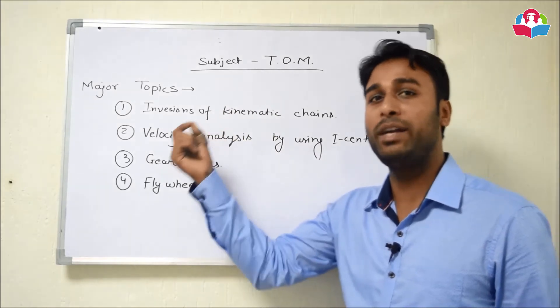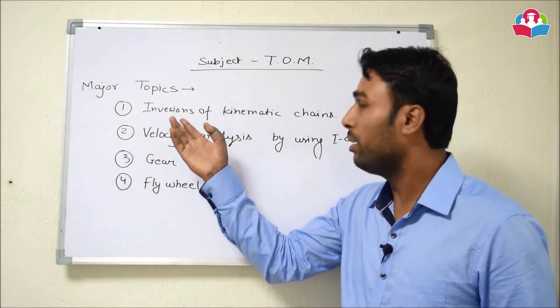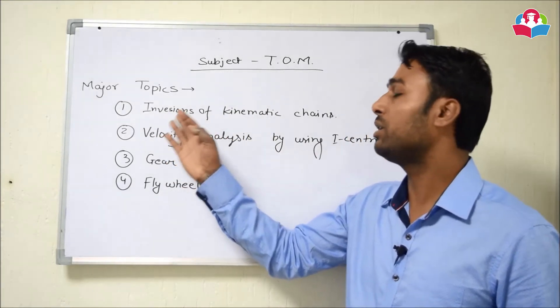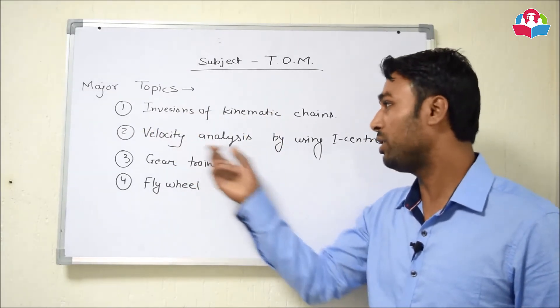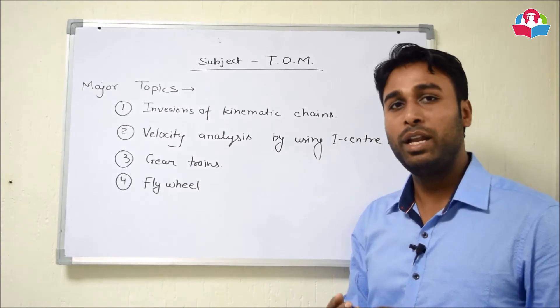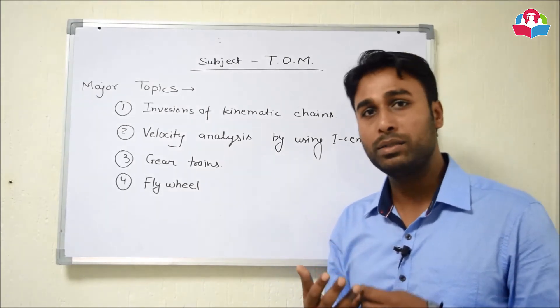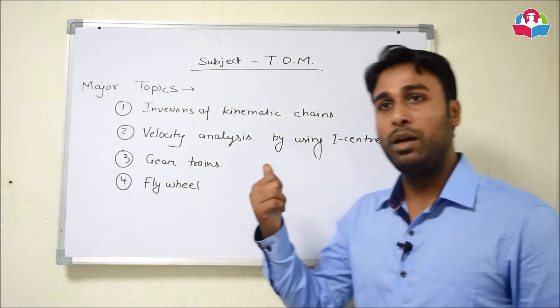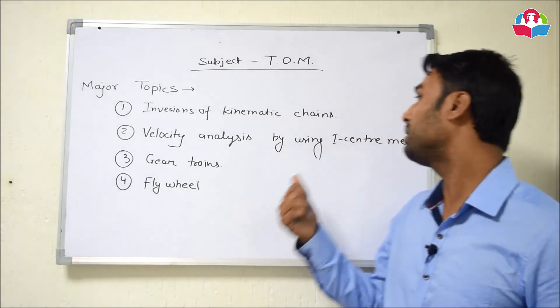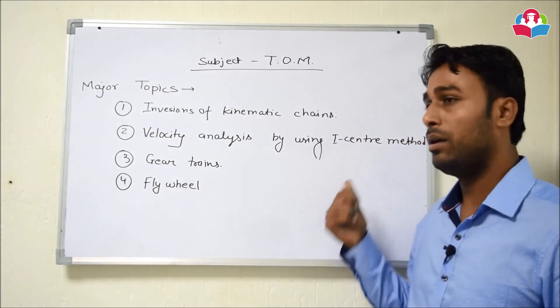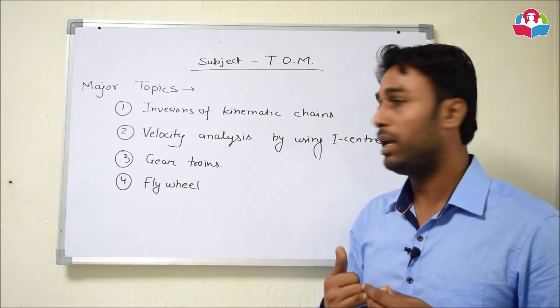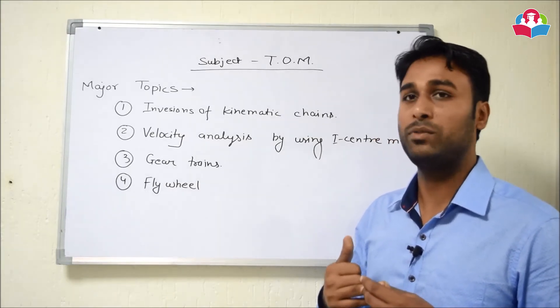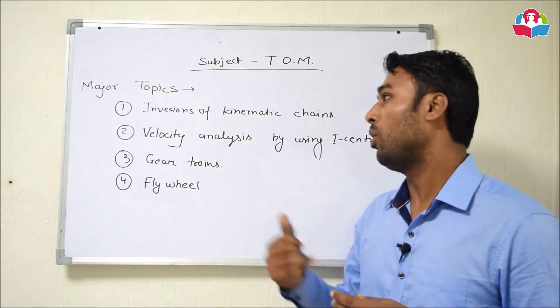And second is velocity analysis. This velocity analysis we can do by two methods. First one is relative velocity method and second is using I-center method. So relative velocity method we cannot use in GATE as it requires various instruments.